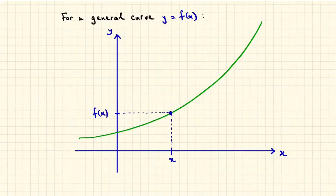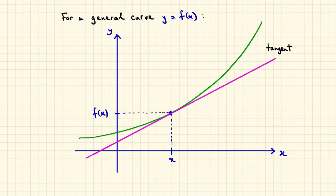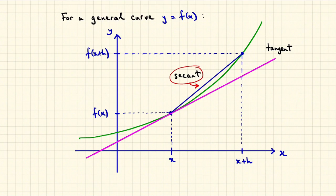We begin by revisiting a familiar diagram intended to represent a general curve y equals f of x and a point of interest with coordinates x, f of x and a tangent line to the curve at that point and a nearby point with coordinates x plus h, f of x plus h. We connect the two points with a straight line segment called a secant.